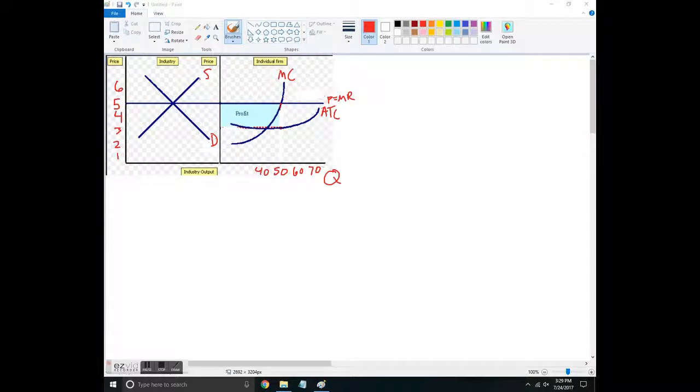We draw the side-by-side graphs already done here for us. This is the industry, so that's all the firms together. This is the price-taking firm, so you'll notice they have a marginal cost curve. They have a price which is...